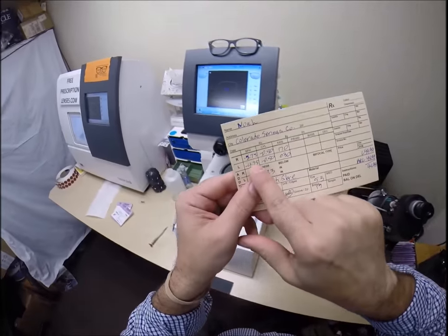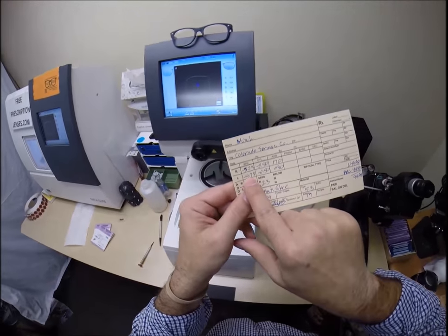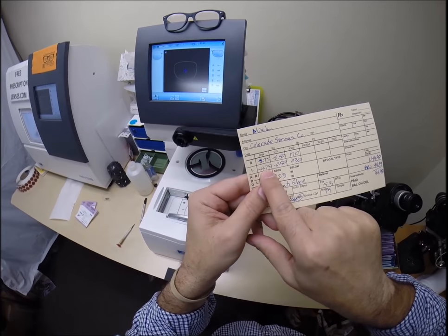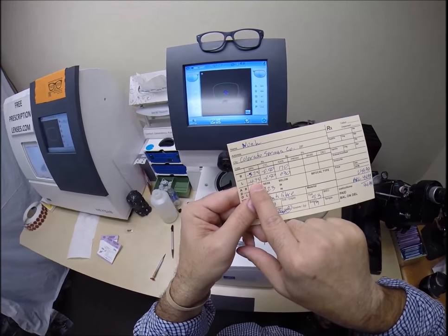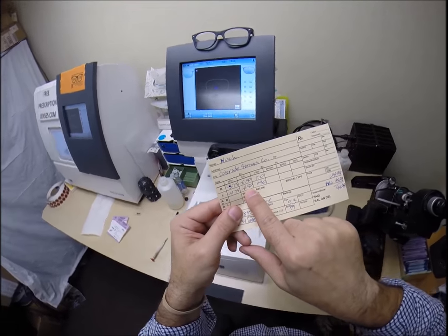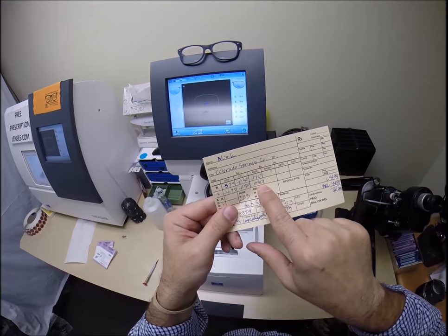Now, your left eye needs a whole diopter less correction. So, let's see, 16, 19. You need 19 steps of nearsighted correction in your left eye. Still an additional two steps of astigmatism correction in the left eye. But we're going to turn that fine-tune knob to 30.